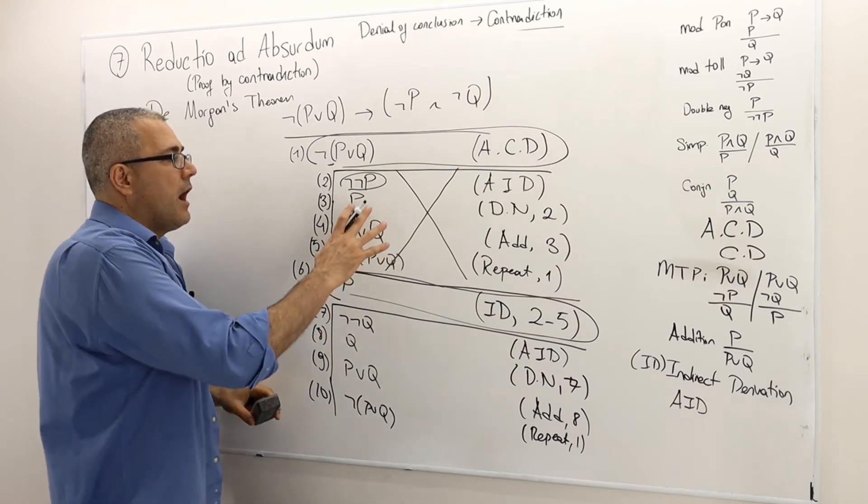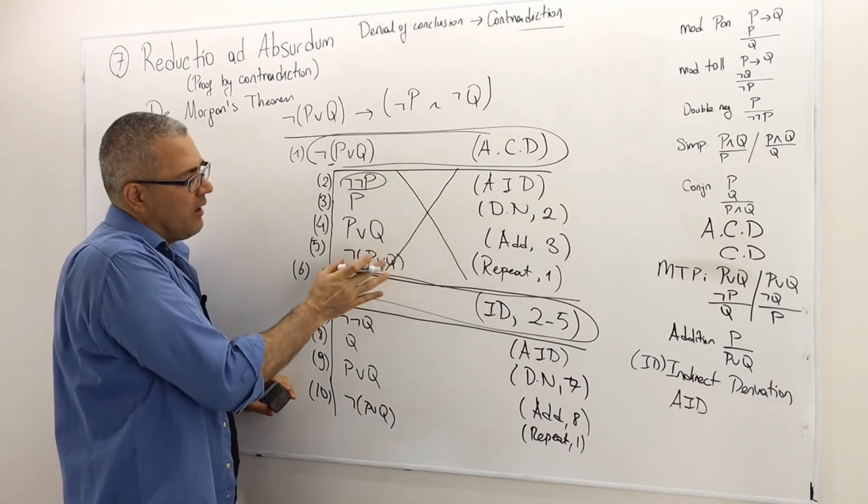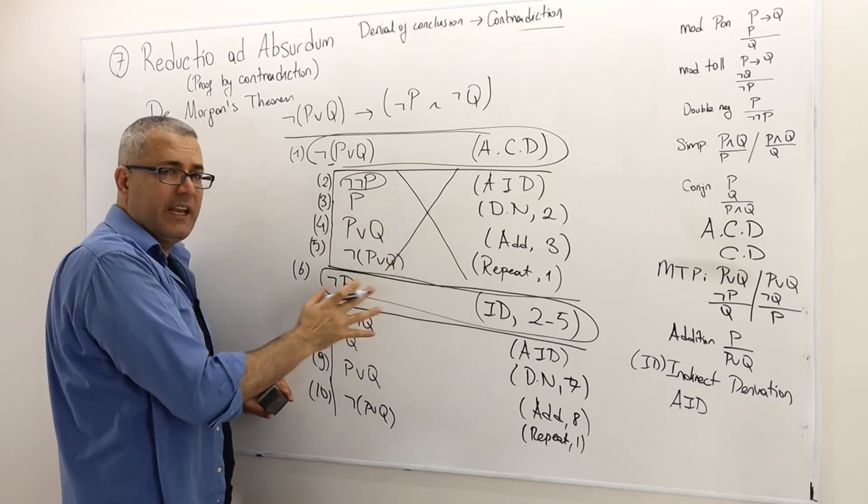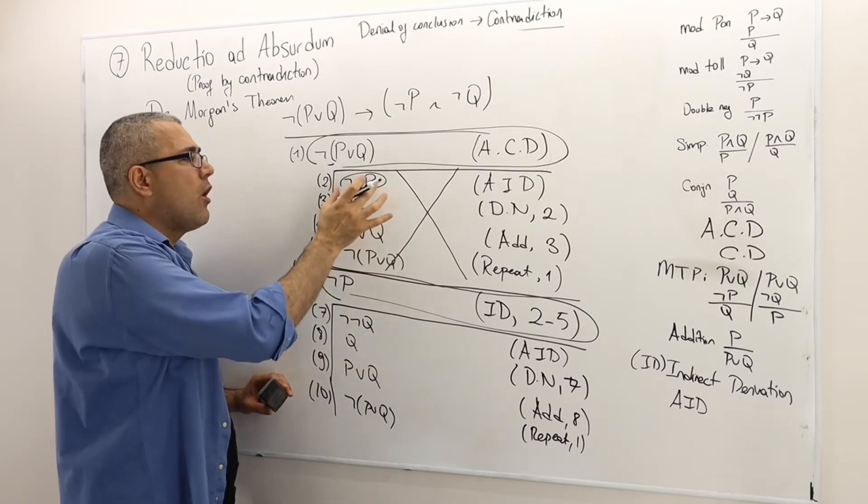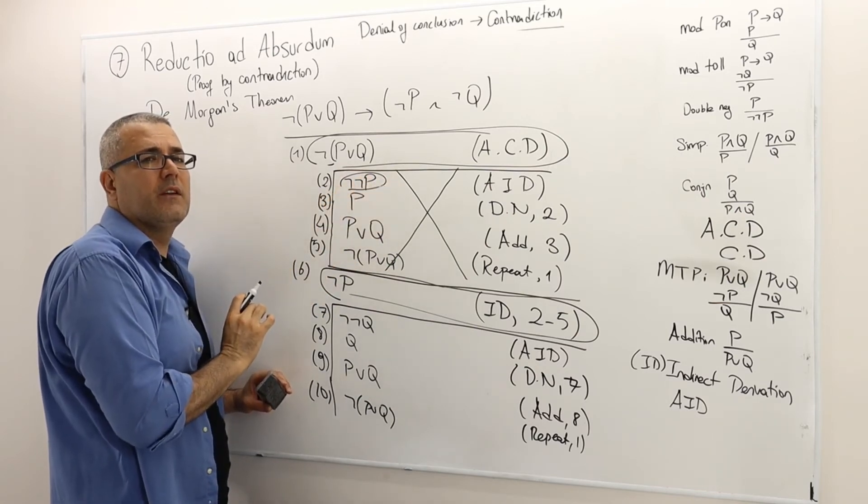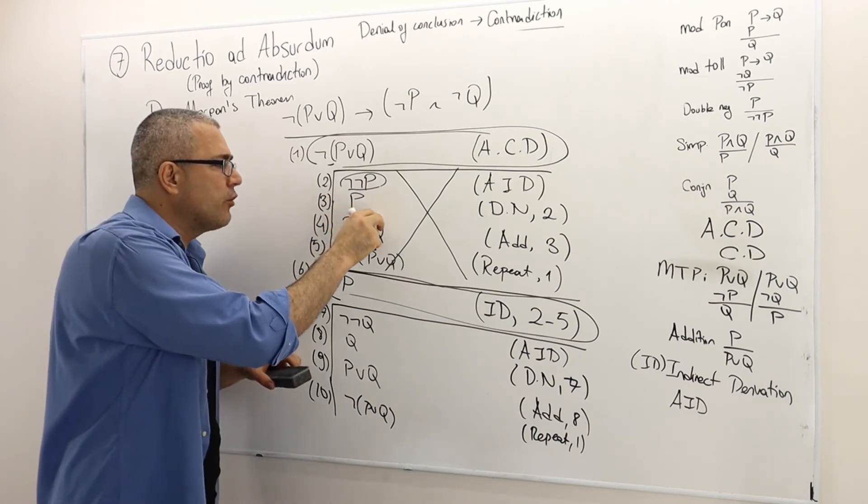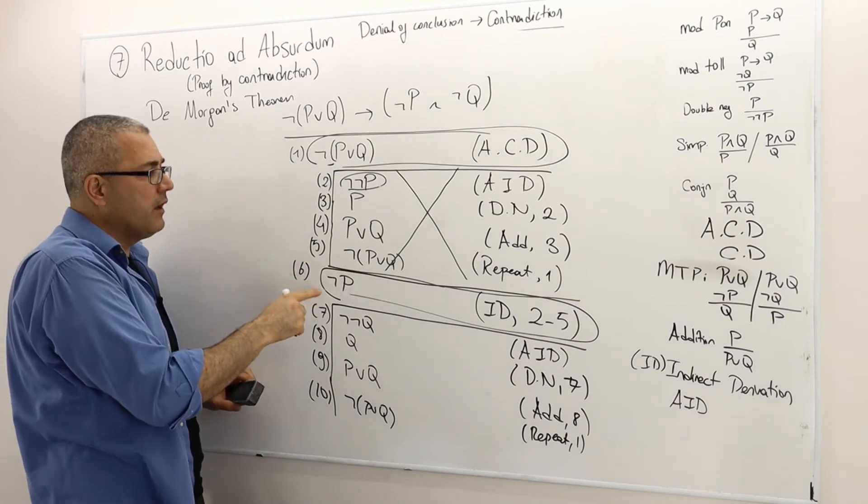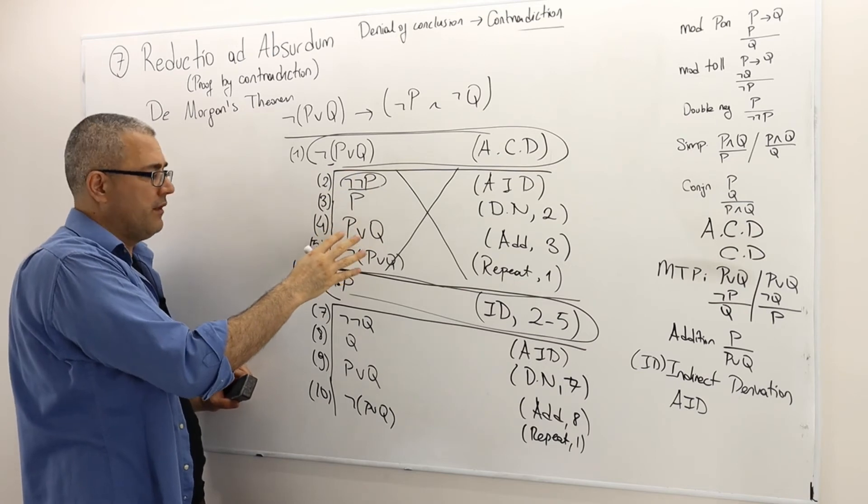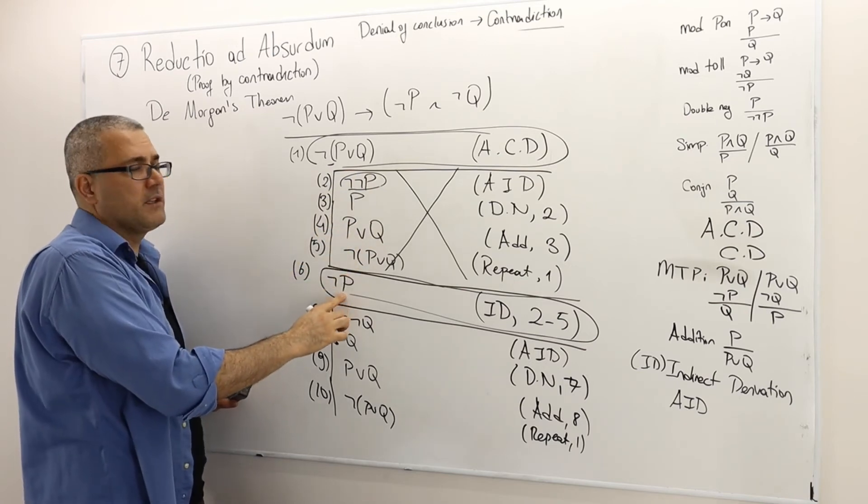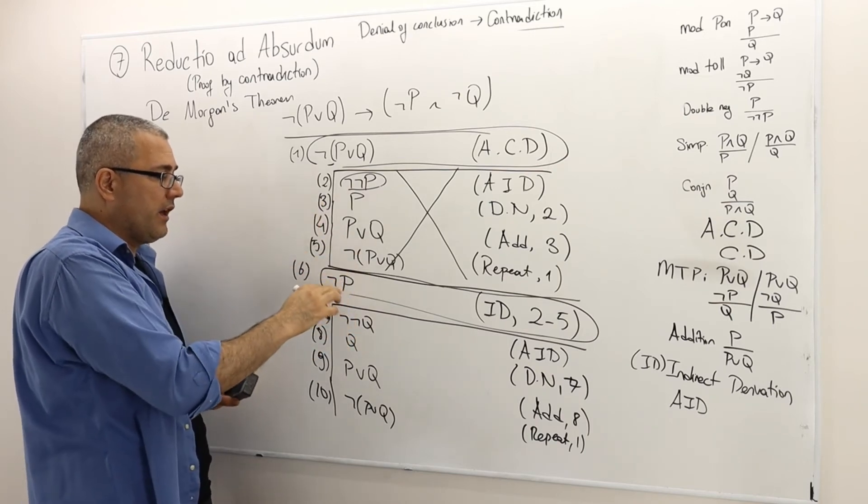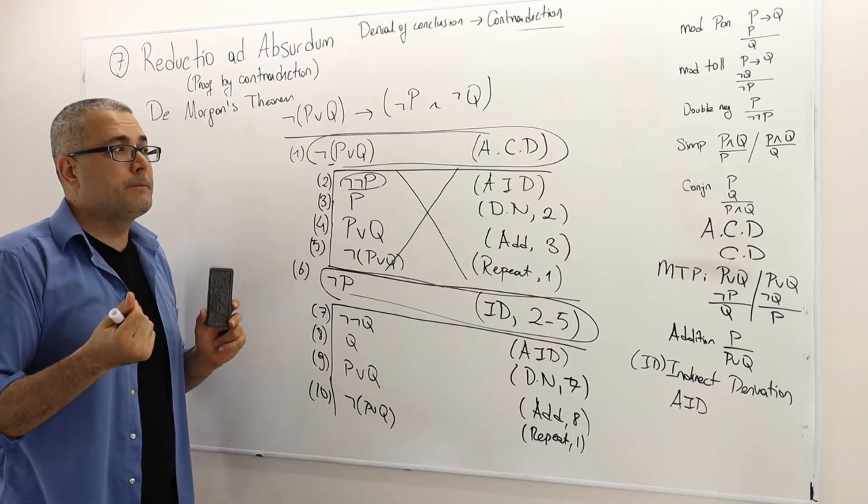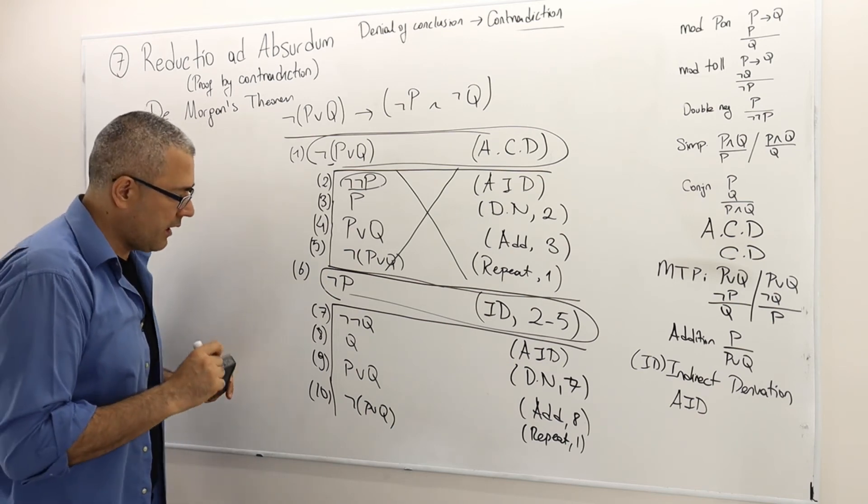So therefore, everything within the box, except this one, because this one is just a repetition of line one. But everything in this box or in any sub proof is true conditional on the initial assumption that we made. So therefore, you cannot take an argument outside of its box. Here, I take this argument outside of the box because by using the indirect derivation method, I proved not P must be correct, true. So therefore, this is why it is outside of the box. So that's a very important point that I wanted to make.